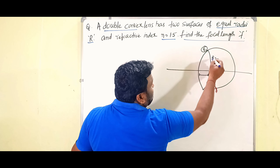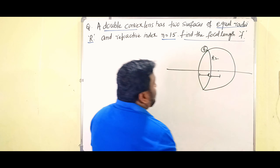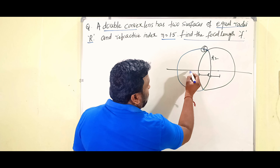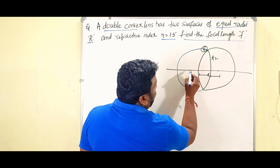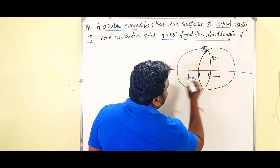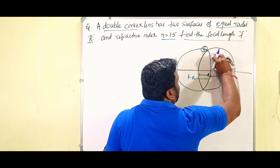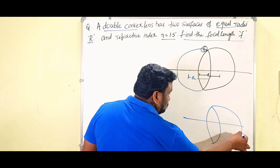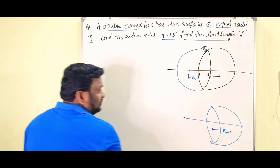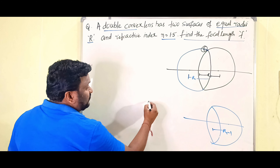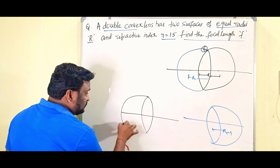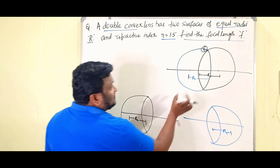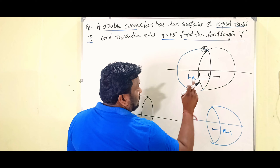Similarly, the second refracting surface has radius of curvature r2. This is another sphere, and the center of curvature is shown here. The distance from the optic center to that center gives r2. So r1 belongs to the first surface and r2 to the second surface.